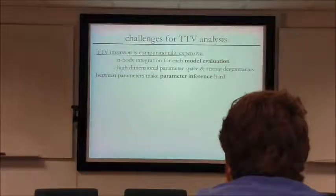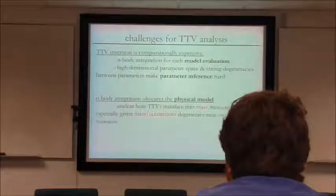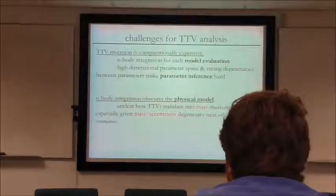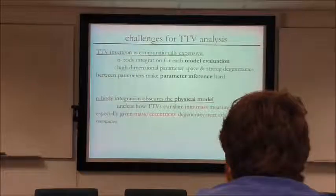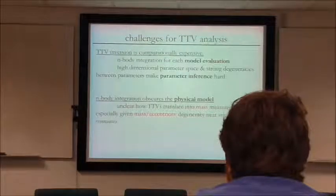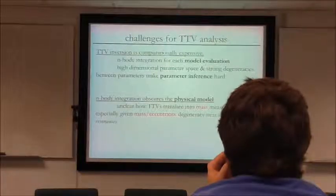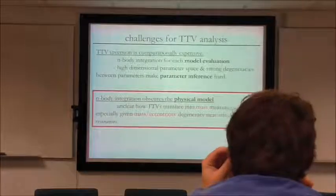Another issue is that the n-body integration is essentially a black box. We understand gravity very well, but after running this big modeling process and getting mass constraints, it's unclear exactly what part of the TTV signal gave you those constraints — especially because of degeneracies. For example, we know there's a mass-eccentricity degeneracy, yet we're still getting mass constraints. The question is: how is this information actually coming from the TTVs? This degeneracy arises for planets that are near what are called mean motion resonances.